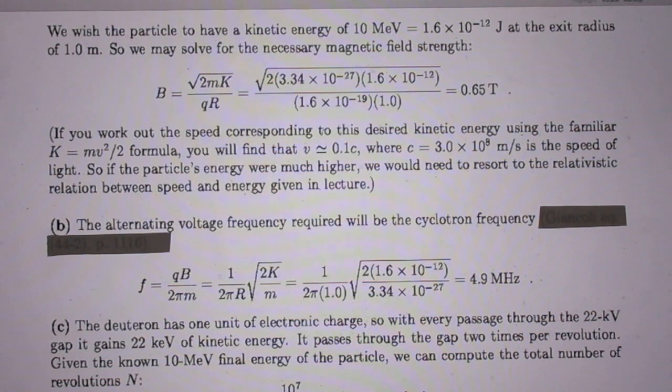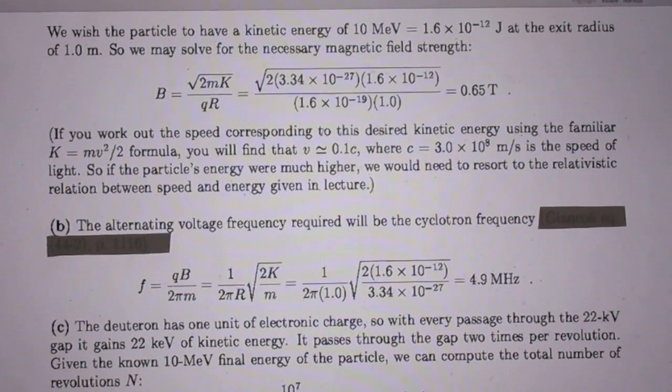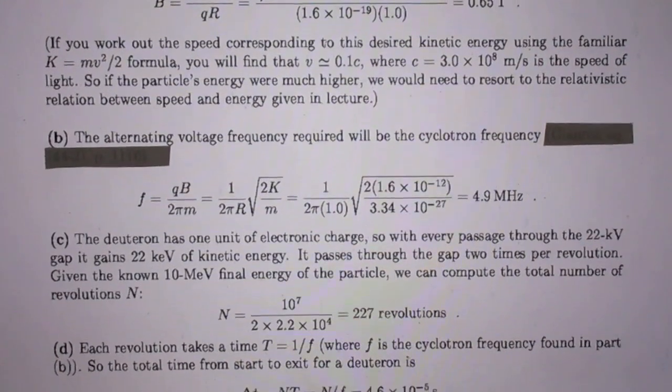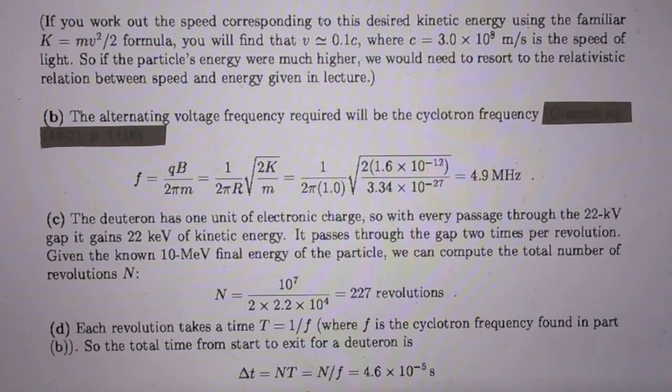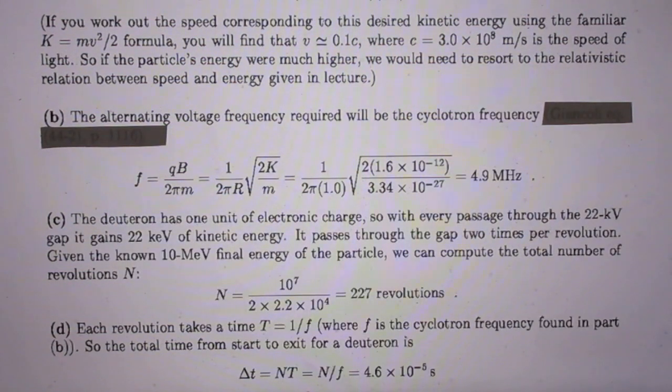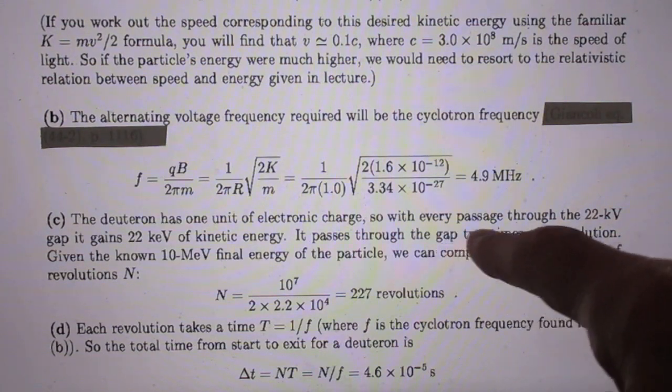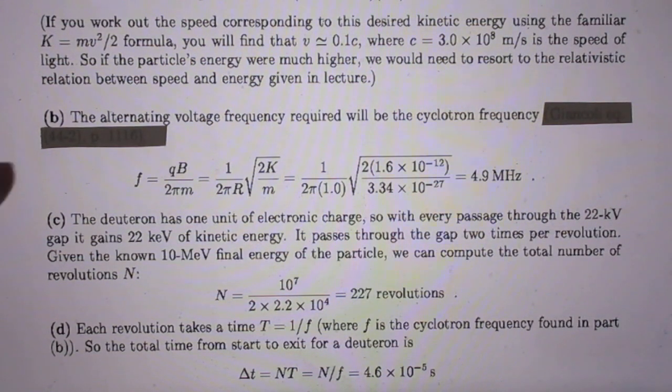Answer to question C. The deuteron has one unit of electric charge. I mentioned that earlier, the 1.6 times 10 to the minus 19. So with every passage through the 22 kilovolt gap, it gains 22 kiloelectron volts of kinetic energy. However, it passes through the gap twice per revolution.